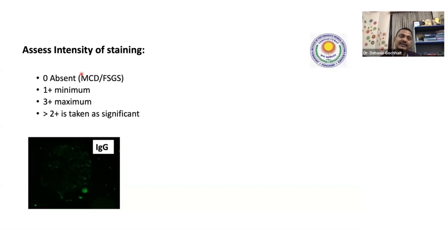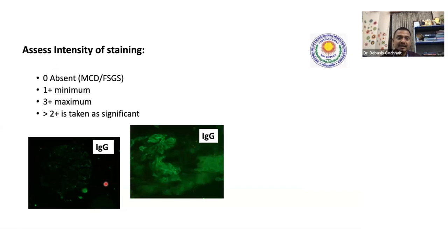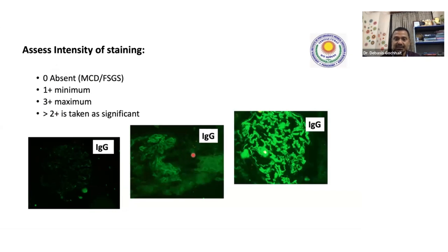For intensity scoring: very faint staining of IgG is 1+; a little brighter is 2+; very bright is 3+. That is how we grade intensity. Distribution is the next important thing: deposits can be in the glomerulus, tubules, or interstitium. In the glomerulus, all immune complex mediated diseases will have deposits in the glomerular basement membrane — here you can see a nice granular 3+ staining in the membrane. The second pattern is mesangial deposit — here the deposits are mostly in the mesangium, this one is IgA.